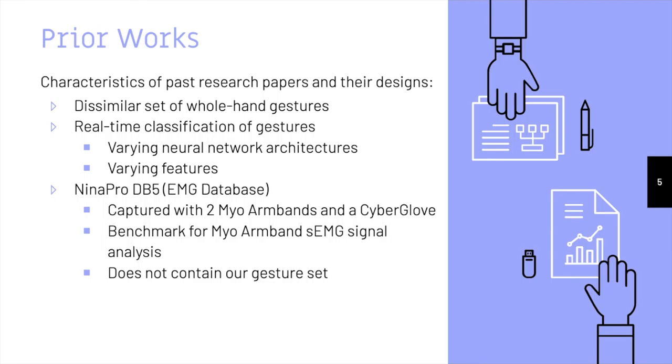Tested architectures include CNN, ANN, LDA, and others. Features can vary between the time domain, frequency domain, a mixture of both, or neither.